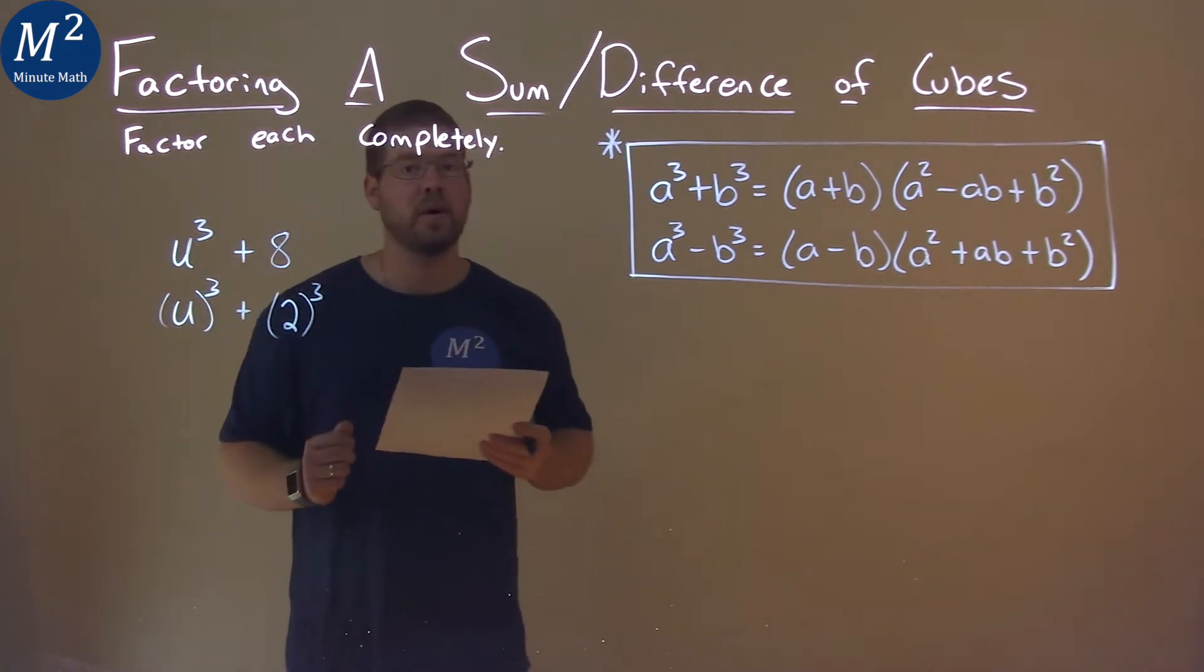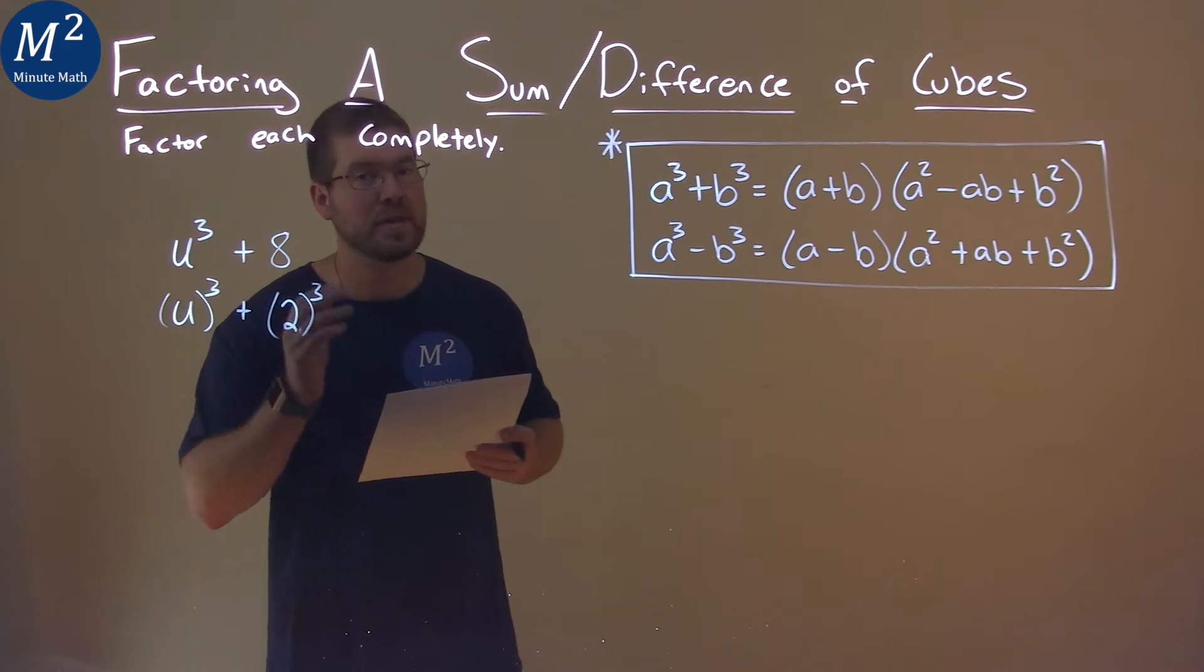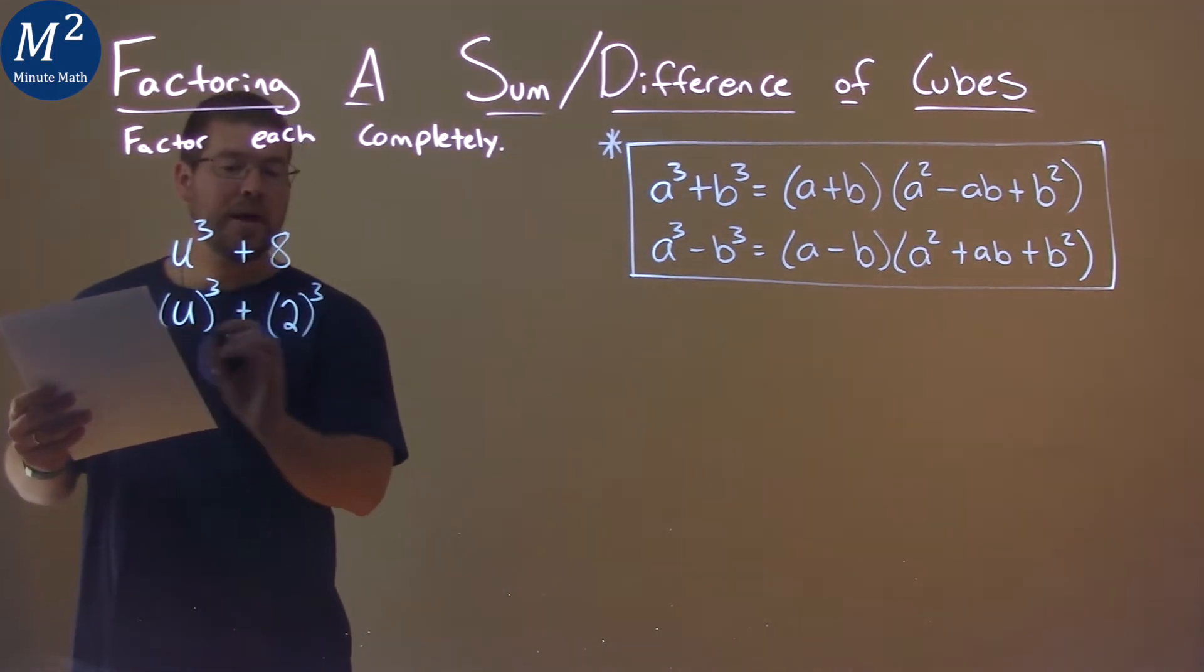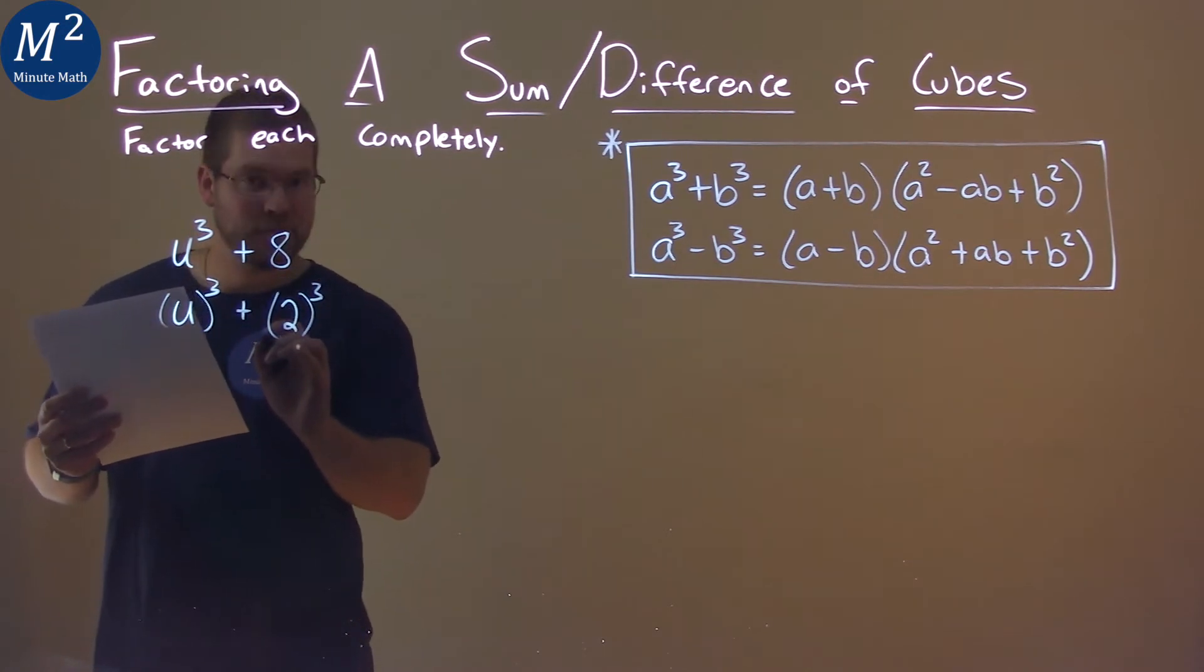And now we have a sum of cubes: u cubed plus 2 cubed. So we can use our formula. Our a value will be u, and our b value would be 2. Kind of rhymes.